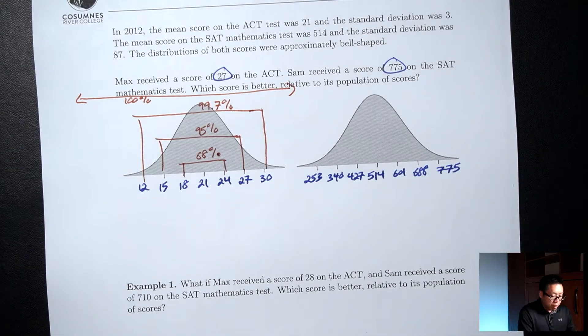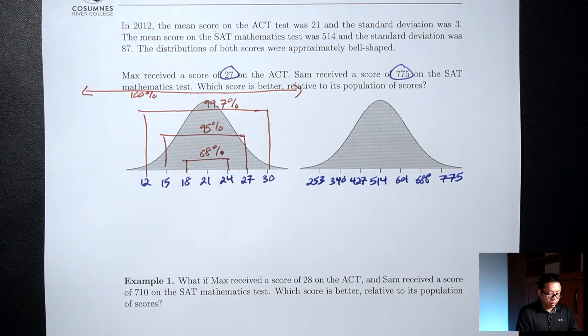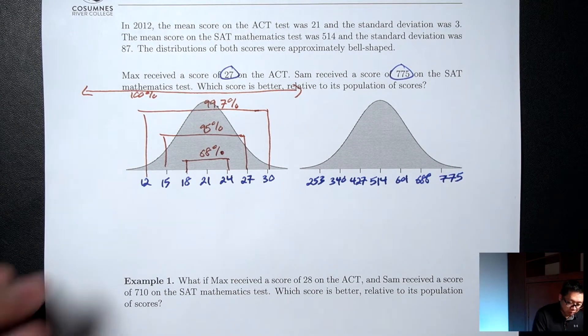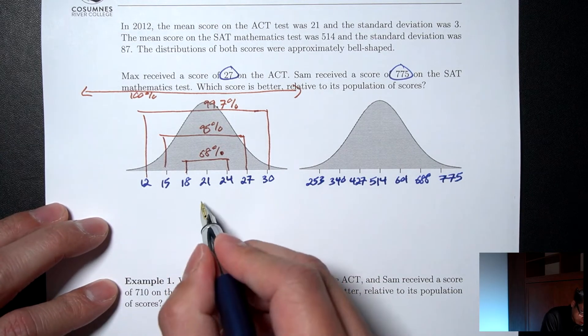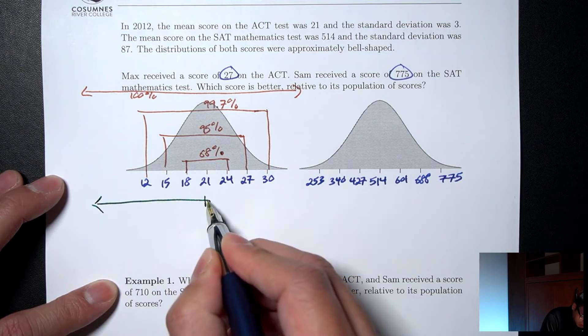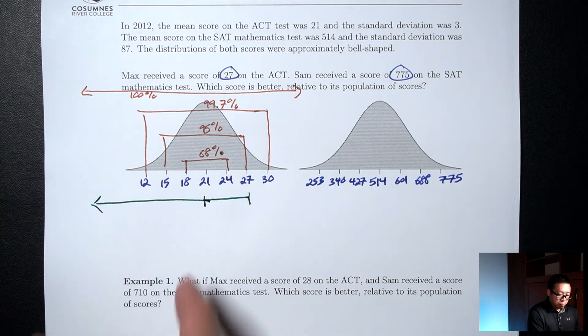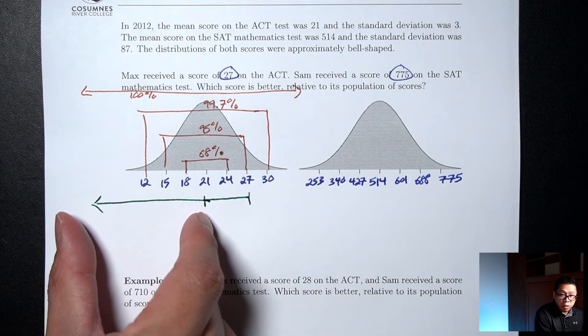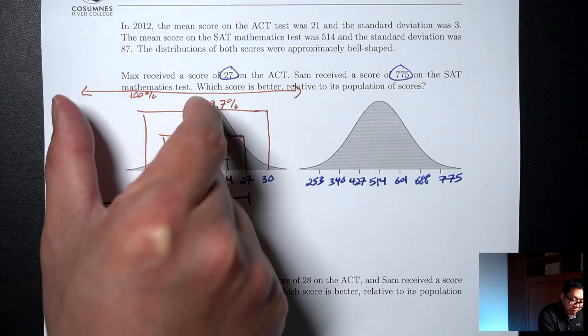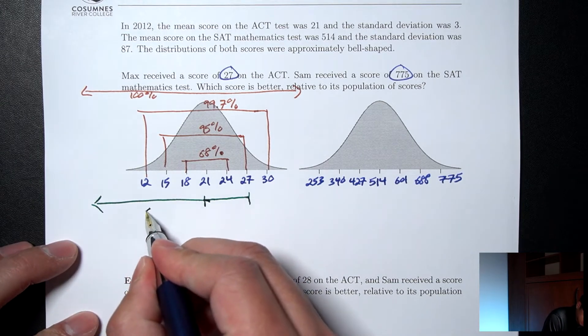Now, what I want to calculate here is what percent is to the left of this 27. So I'm going to do this in two steps. First, I'm going to do middle to the left and then middle to the 27. Middle to the left should be half of the 100%, so middle to the left is 50%.